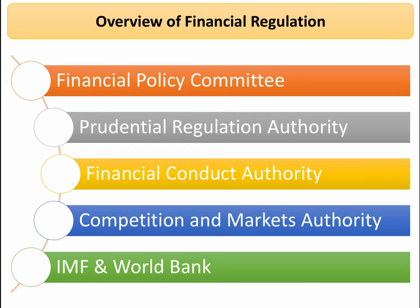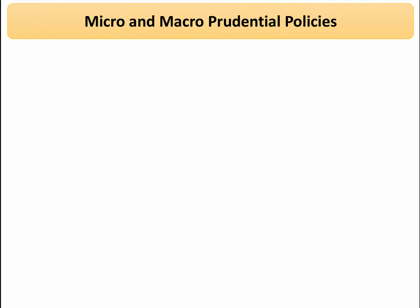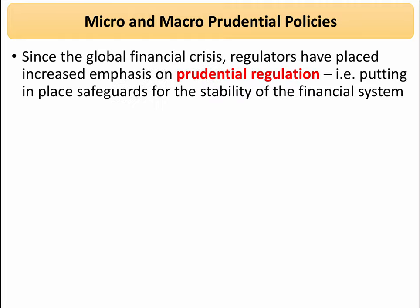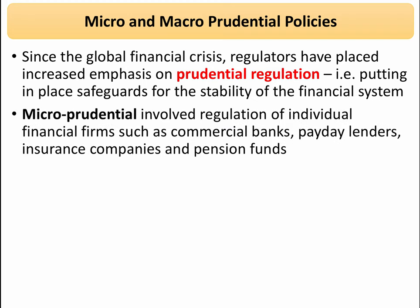In this revision video I'll focus on just the first three. It's quite important to make a distinction between micro and macro prudential policies. Prudential basically means oversight and safety — trying to be cautious in terms of how the financial system works. Since the global financial crisis, regulators have placed a lot of emphasis on prudential regulation — putting in place sufficient safeguards for the overall stability of the financial system.